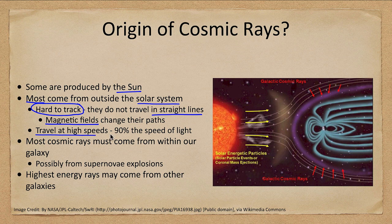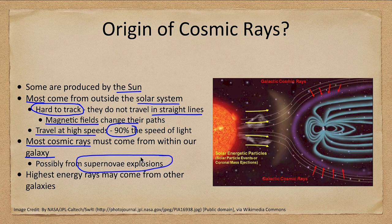We do know that cosmic rays are traveling at high speeds — about 90% of the speed of light — and we believe that most come from within our galaxy. A likely source is supernova explosions: a massive supernova would expel particles at very high speed, which could then travel through space until striking something. We also believe that many of the highest energy rays may come from other galaxies.